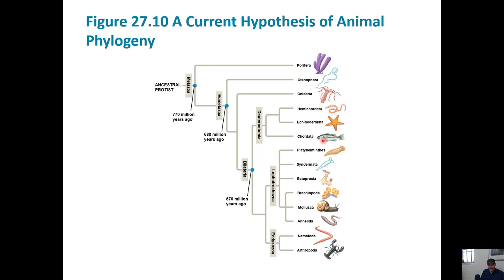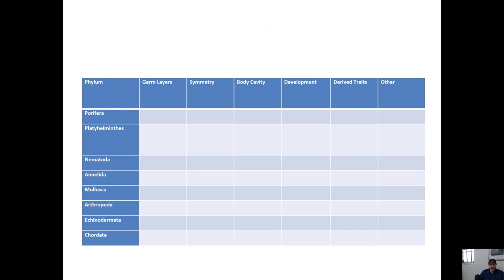Here's a cladogram of the animal kingdom. Our outgroup, or the most basal animal we're going to talk about, are the Porifera. These names are the phyla — kingdom Animalia, phylum Porifera. We're not going to talk about every one of these; we're going to hit some of the highlights: mostly Porifera, Cnidaria, Echinodermata, Chordata, Platyhelminthes, Mollusca, Annelida, Nematoda, and Arthropoda. Those are the major groups we're going to talk about in the lecture over the next several days.